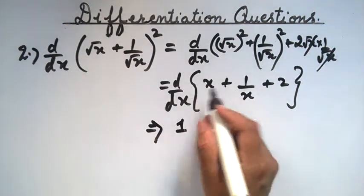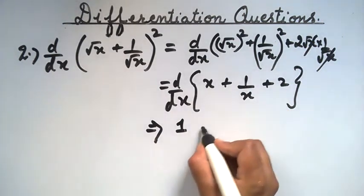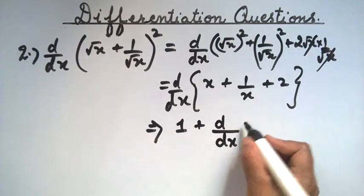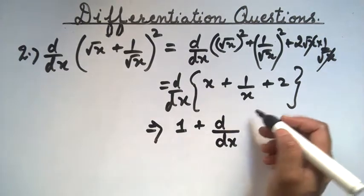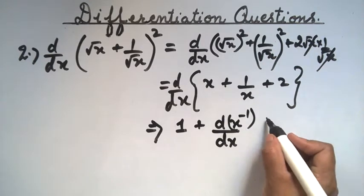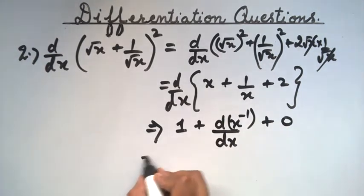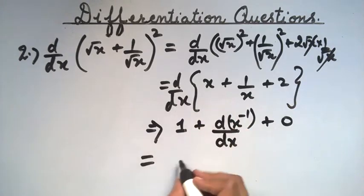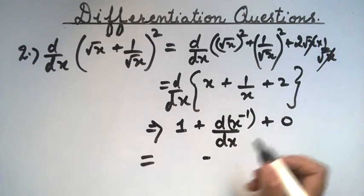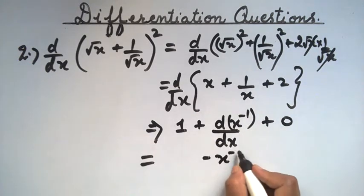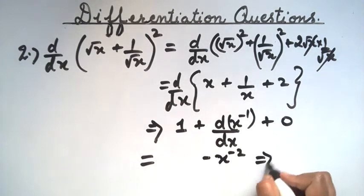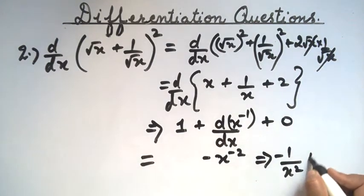Differentiating x gives 1. Differentiating 2 (a constant) gives 0. Differentiating 1/x, which is x raised to the power −1, gives −1 times x raised to the power −2, which can be written as −1 upon x squared. This is the answer.